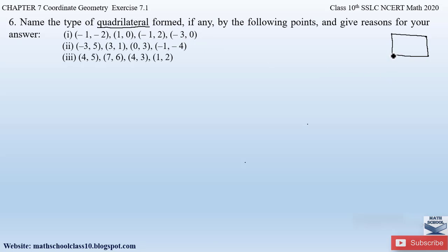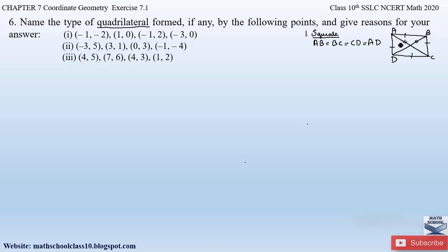There are four kinds of quadrilaterals whose properties we should know before solving these kinds of problems. Let us name the quadrilateral as A, B, C and D. The first type is a square. If in a quadrilateral all four sides are equal and also the diagonals are equal, then we can say that a quadrilateral forms a square. In a square: AB = BC = CD = AD, and also the diagonal AC = BD.